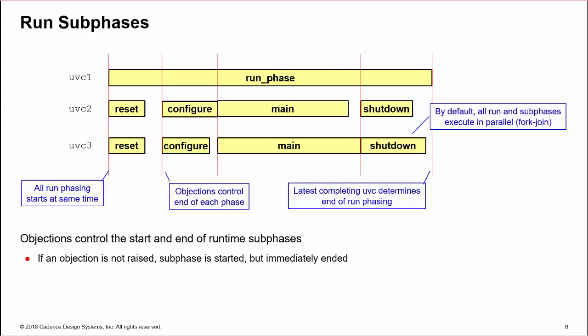Objections must be raised and dropped for each sub-phase otherwise they will immediately terminate. Individual drain times can be set for each sub-phase, remembering that the default drain time is 0. For more information on runtime sub-phases and domains, please see the UVM runtime phasing training byte.